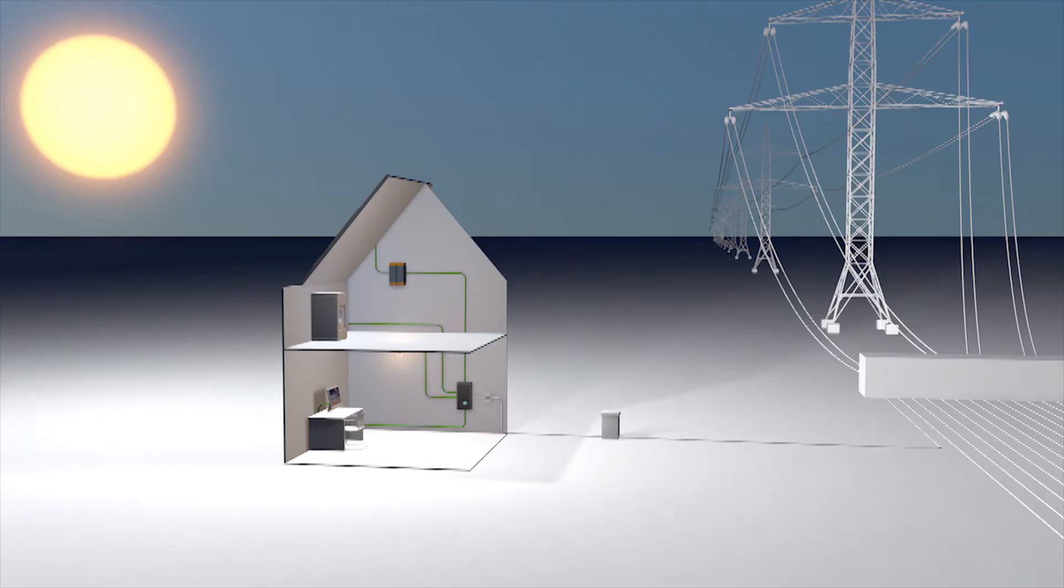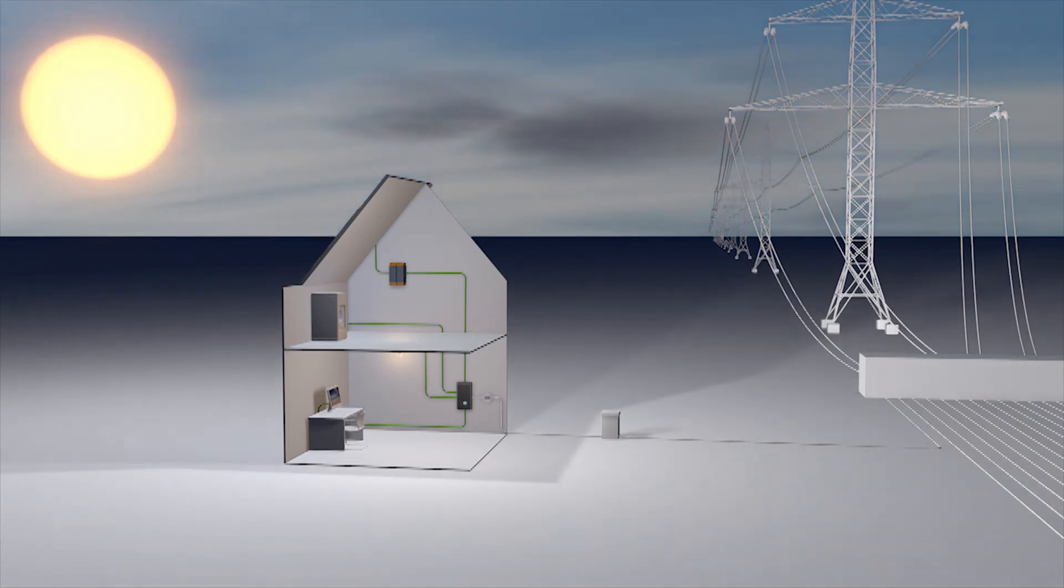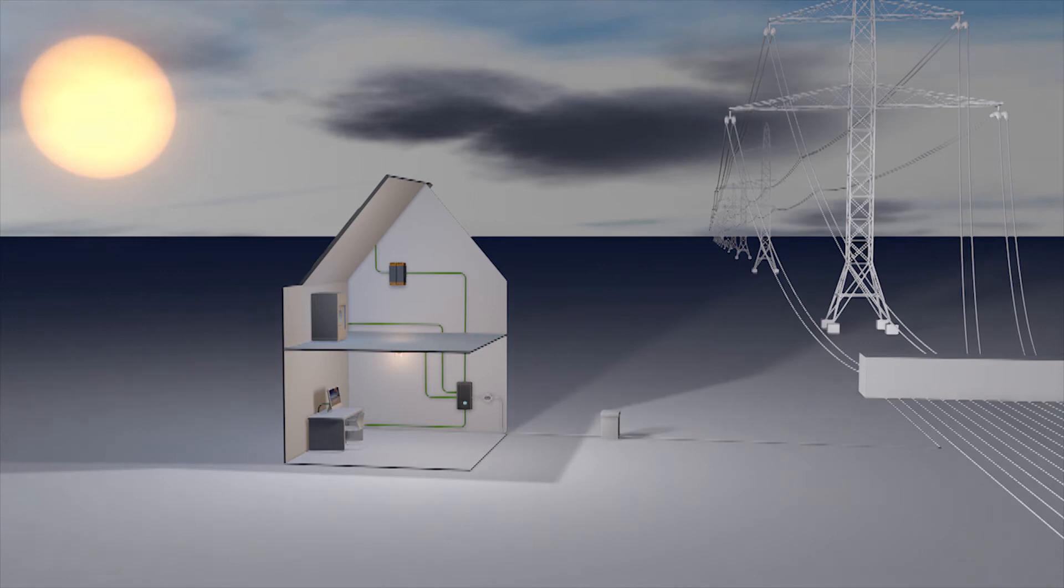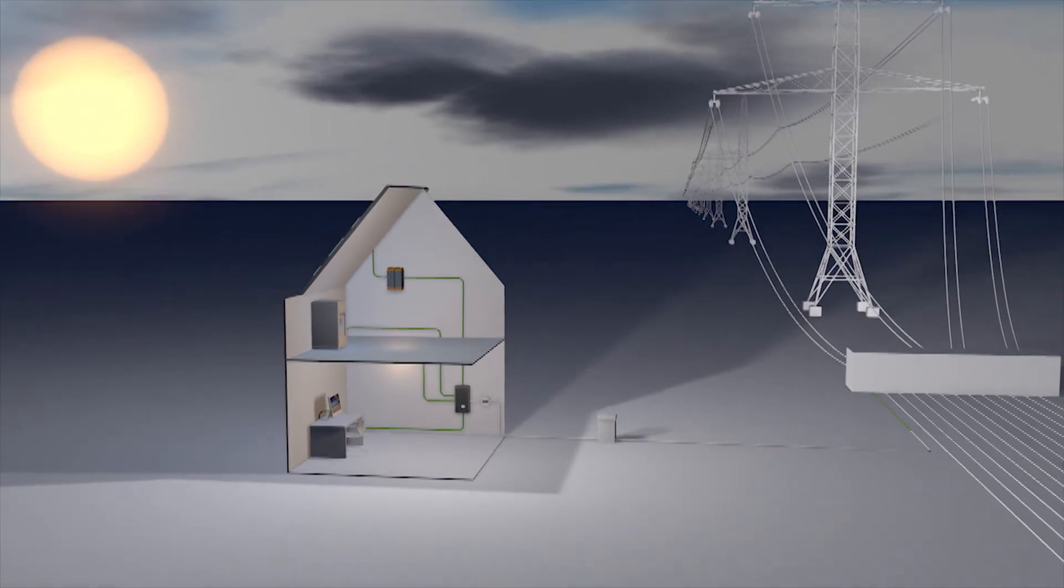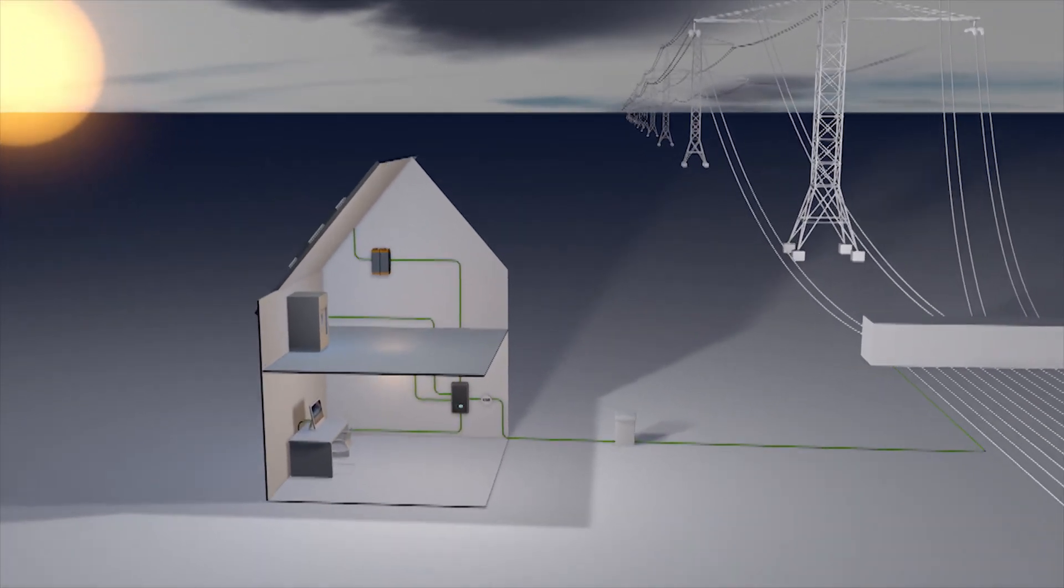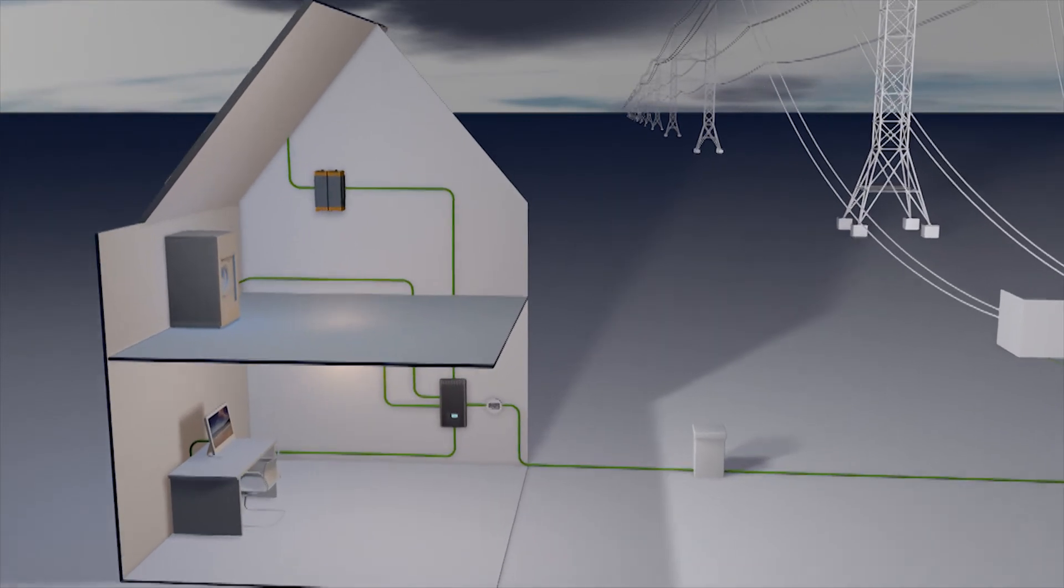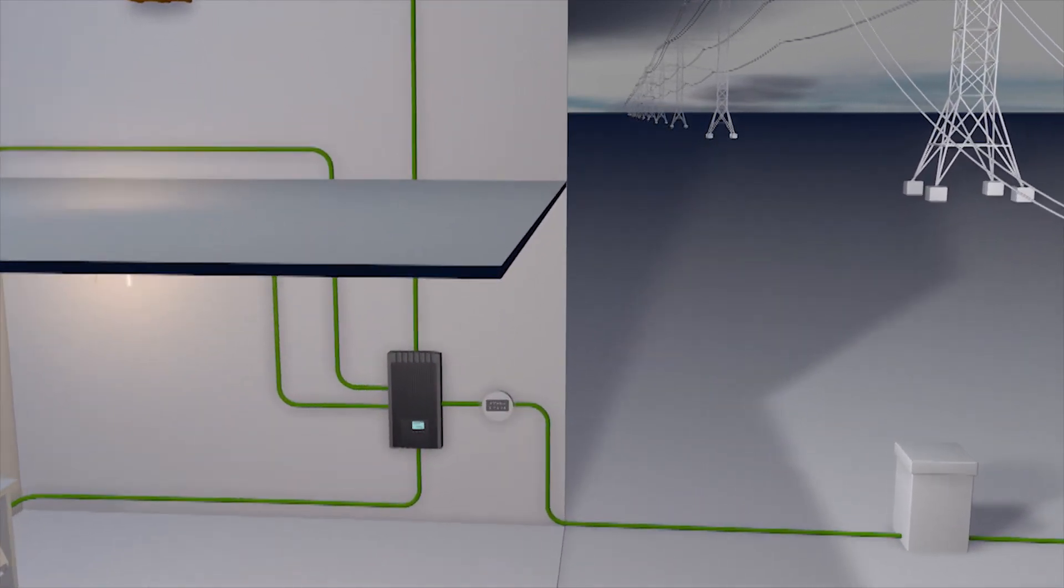On the other hand, on a cloudy day, the PV system is providing less power than what the load is expecting. Under such a condition, the load demand is fulfilled by taking the excess power from the grid. Thus, the net meter registers a net consumption as well.